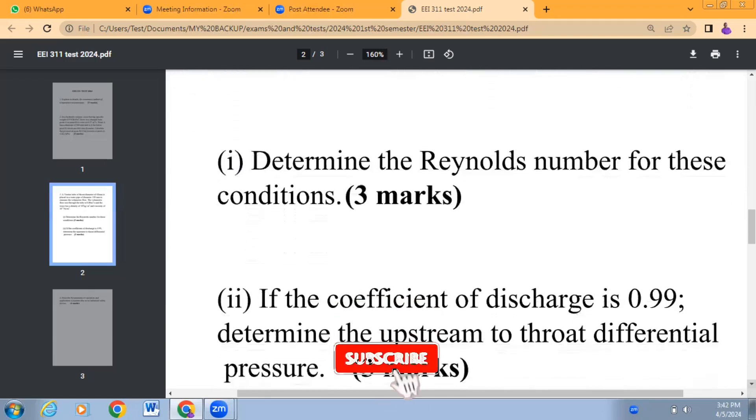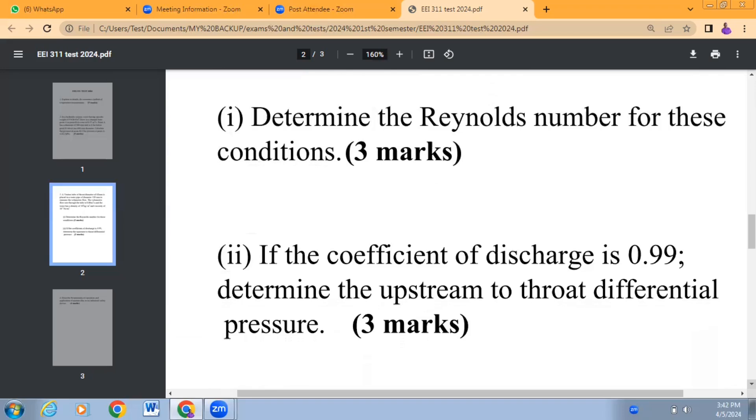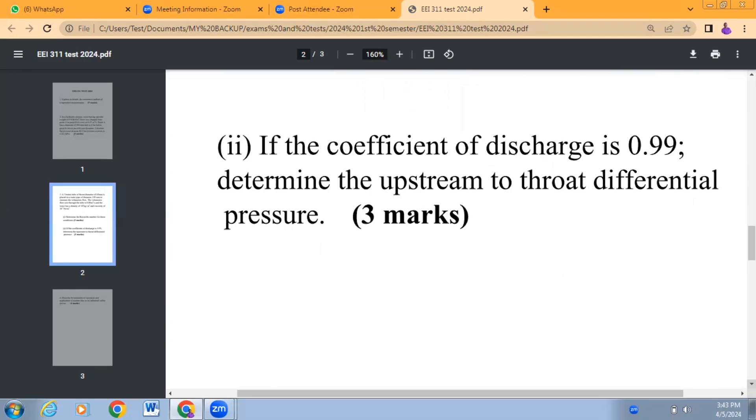First question: determine the Reynolds number for these conditions - that's the first calculation which is three points. The second question: if the coefficient of discharge is 0.99, determine the upstream to throat differential pressure - that's another three points. We want you to show your workings clearly in order to get the full points in each calculation.